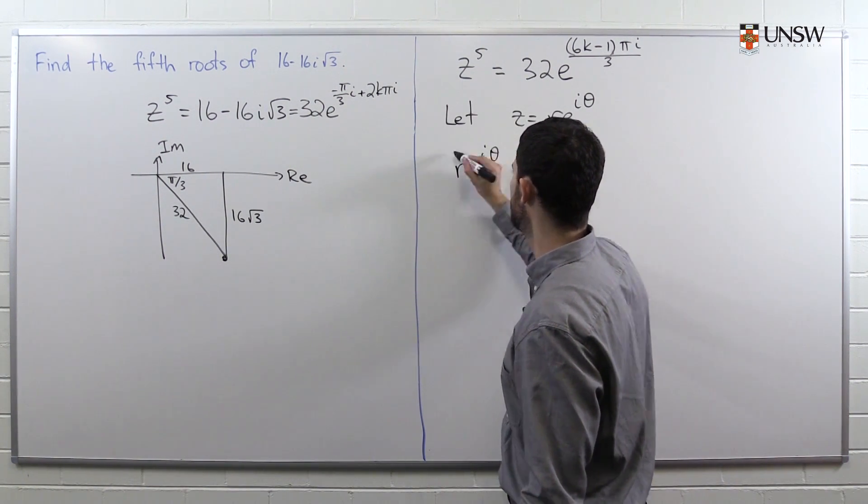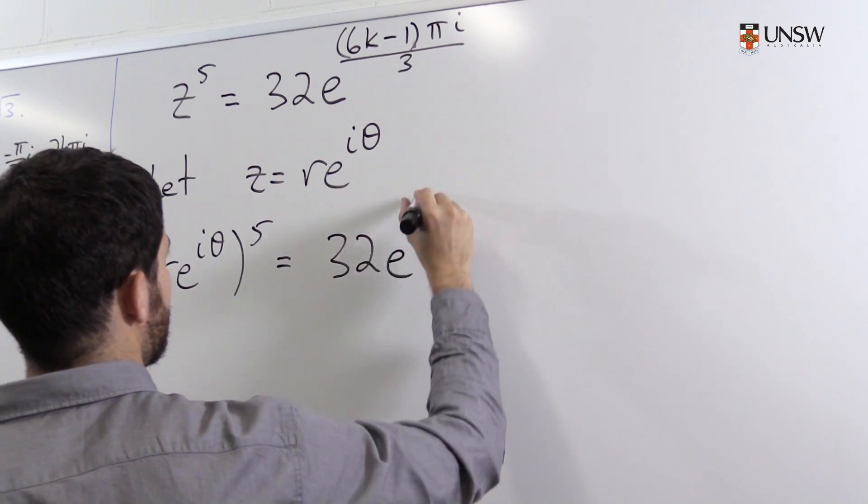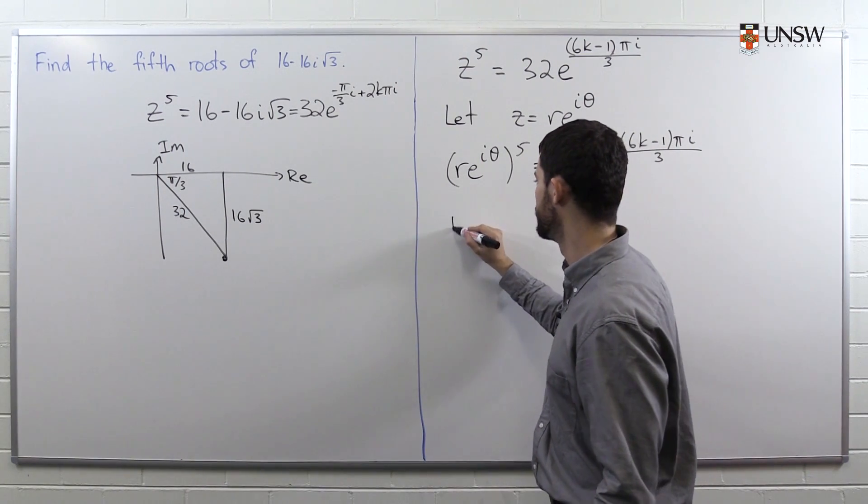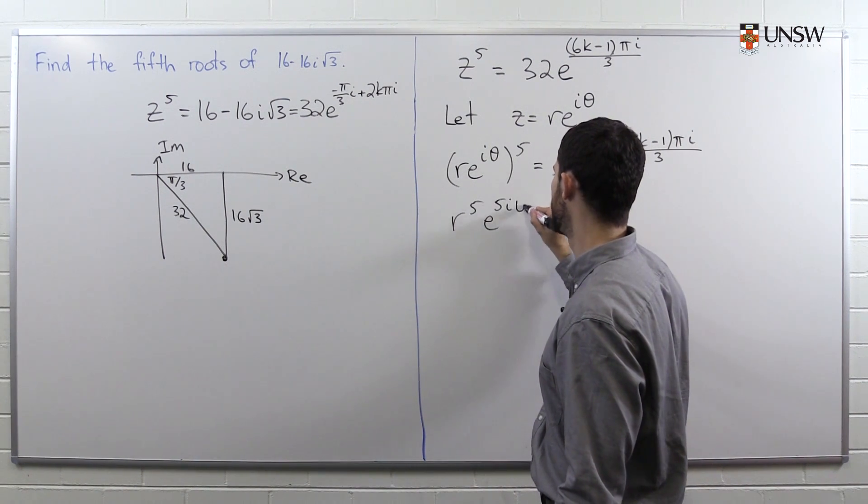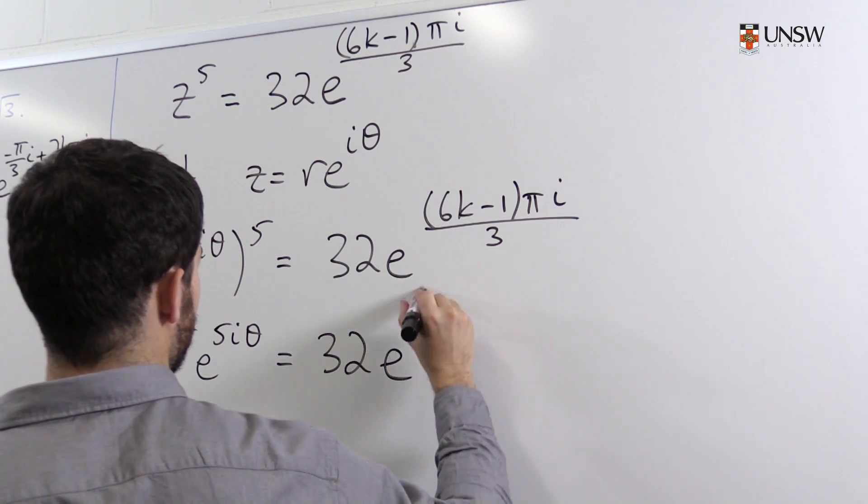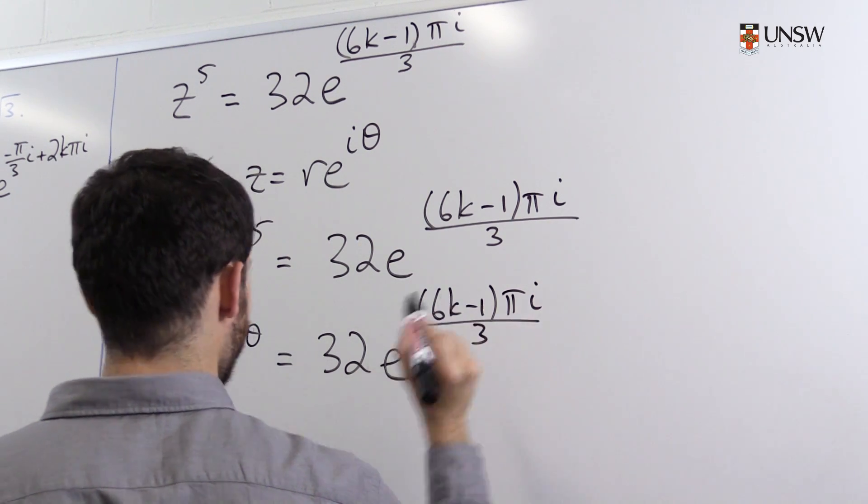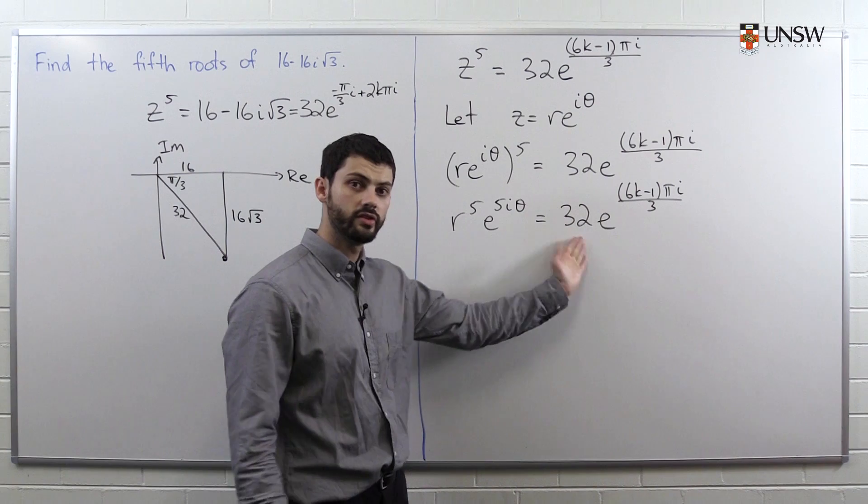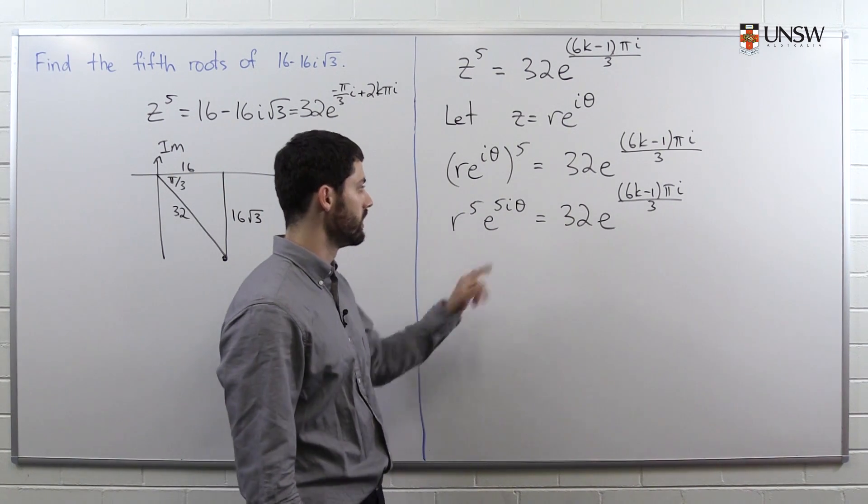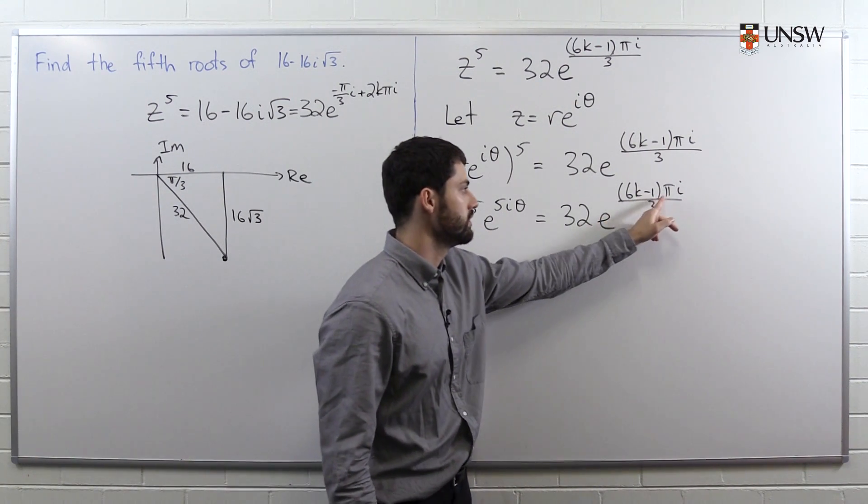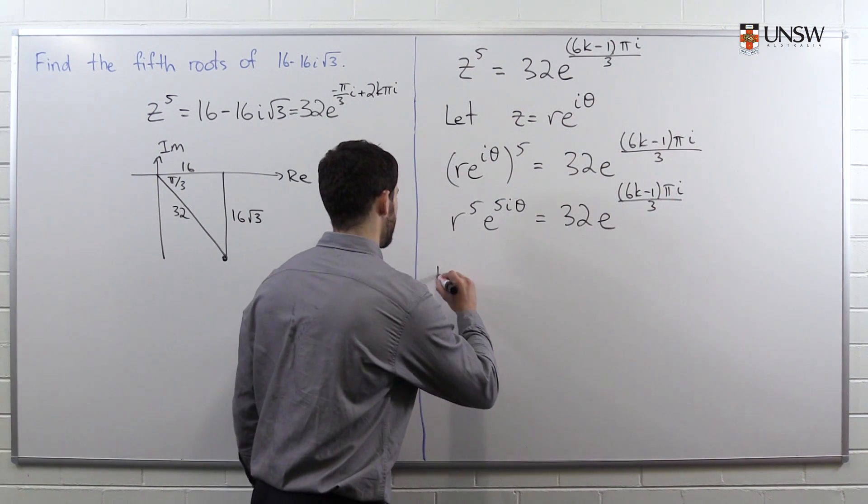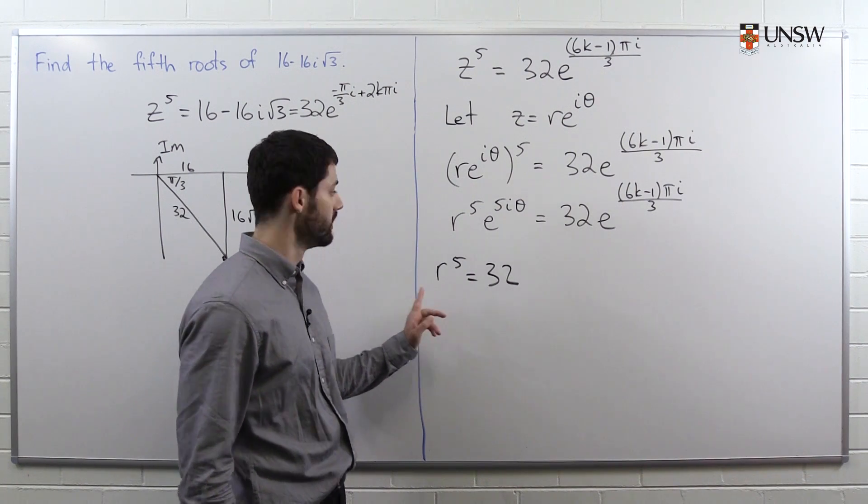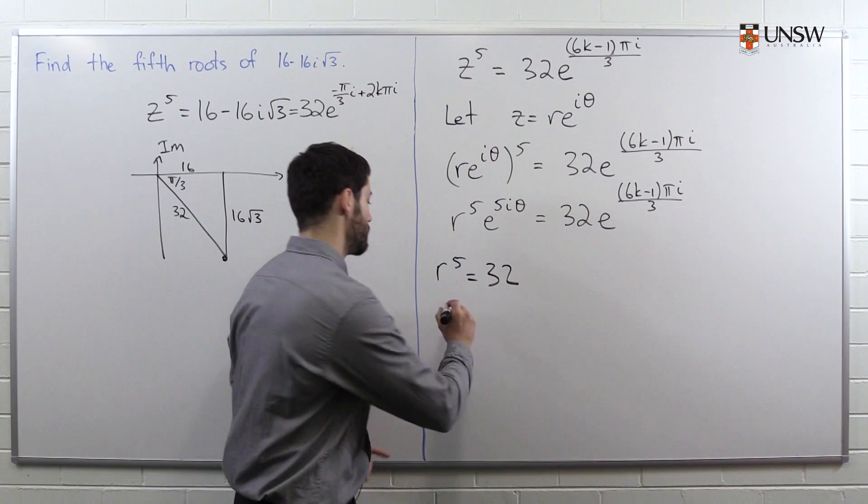So we substitute it in. We get (re^(iθ))^5 = 32e^((6k-1)πi/3). We use r^5*e^(5iθ) = 32e^((6k-1)πi/3). And now we equate the moduluses of these two complex numbers. So r^5 = 32, and r is the modulus of a complex number, so in particular it's a real number. This is not a complex number. So in real numbers, this equation only has one solution, and that's 2. So r is 2.